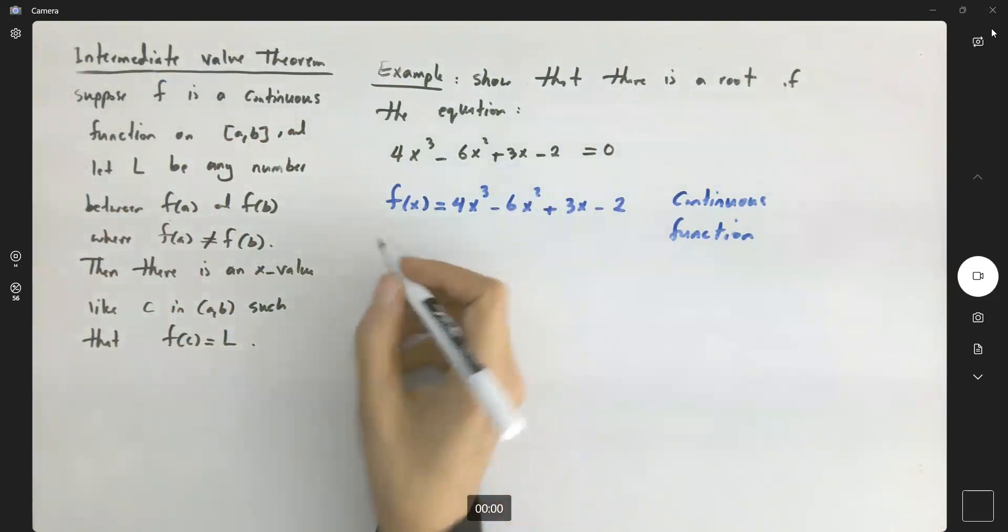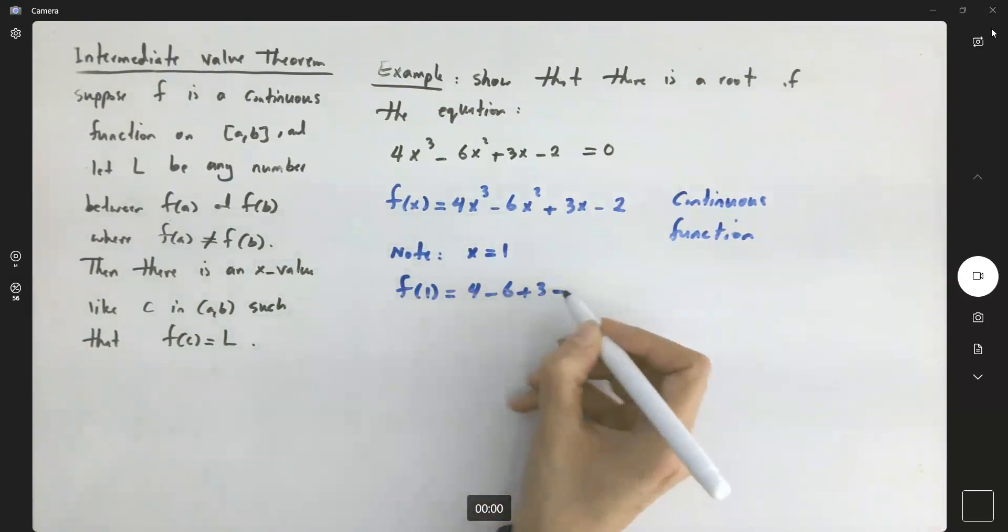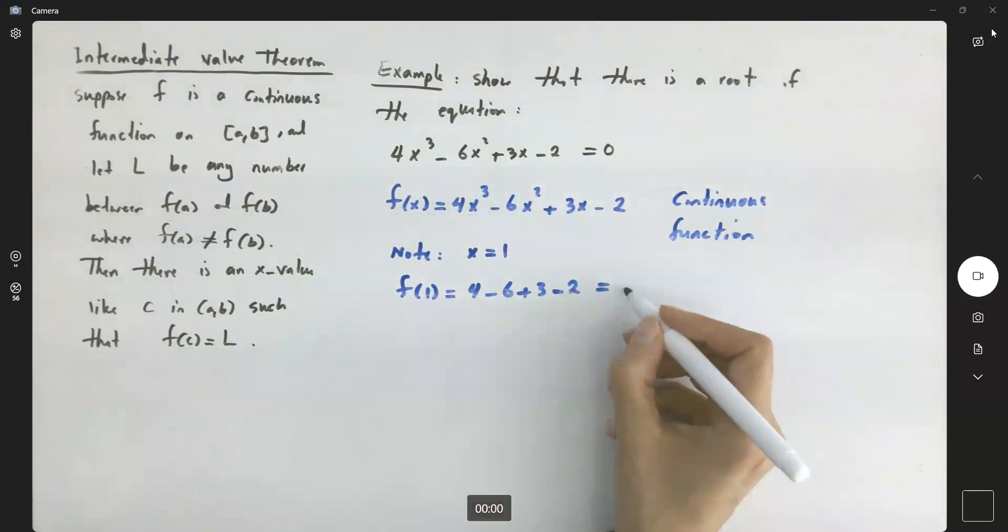So, just a quick note. Here, note that if I plug in 1, then x = 1. My f(1) = 4 - 6 + 3 - 2, which equals -1.